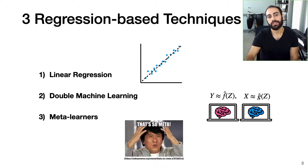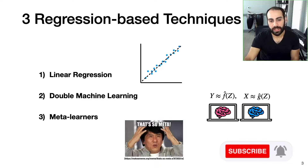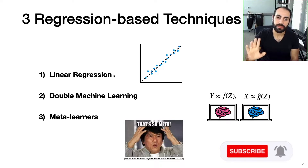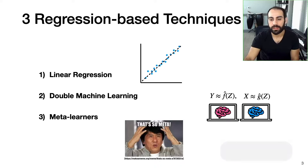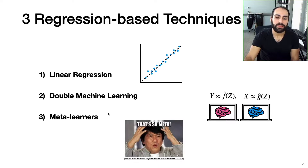In this video, I'm going to talk about three regression-based techniques for estimating causal effects. The first is linear regression, which we've already touched on but I'll discuss more in the next slide. We have a more sophisticated technique called double machine learning, and then finally another popular technique called meta learners.